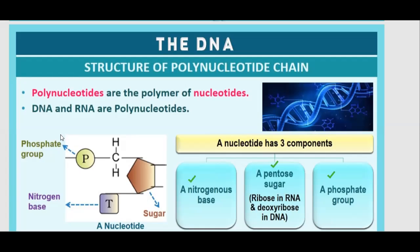Here you can see the structure. This one is the phosphate group, this one is the nitrogenous base, and this one is the pentose sugar — and together it is a nucleotide. DNA and RNA are basically polynucleotides, meaning they are made up of many, many nucleotides.